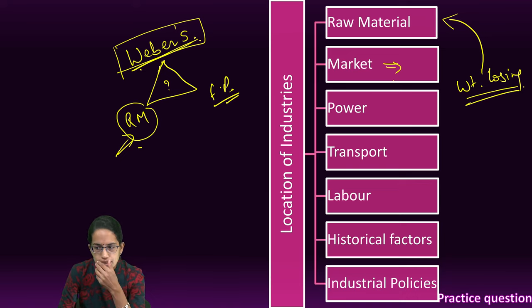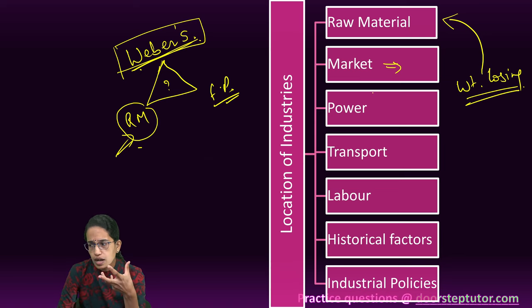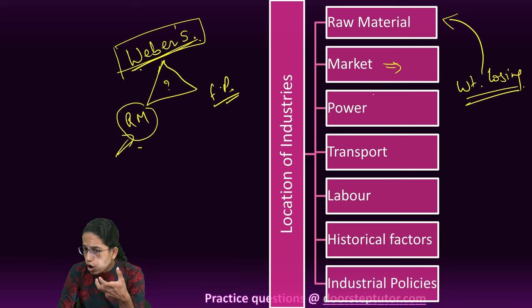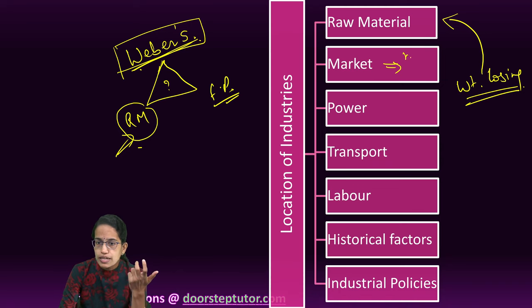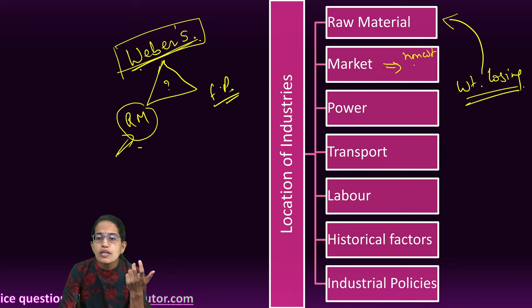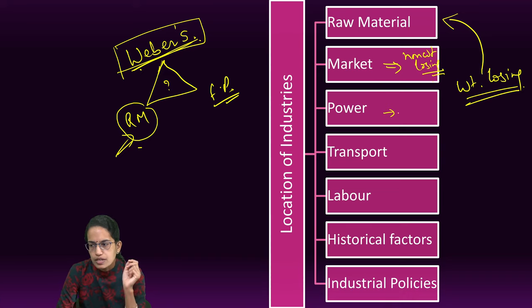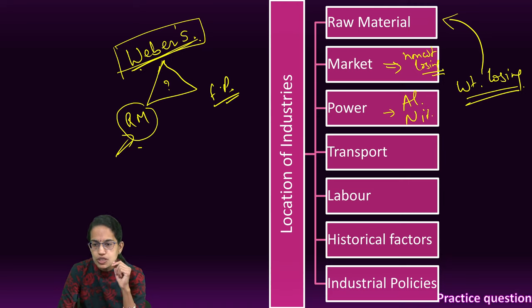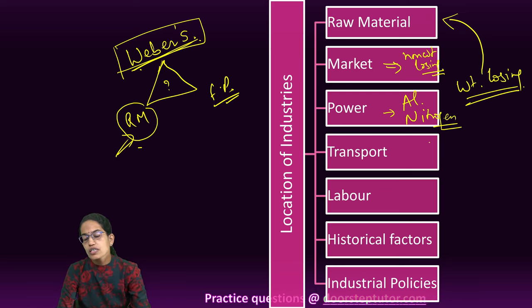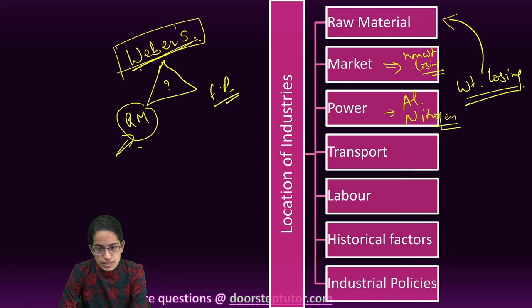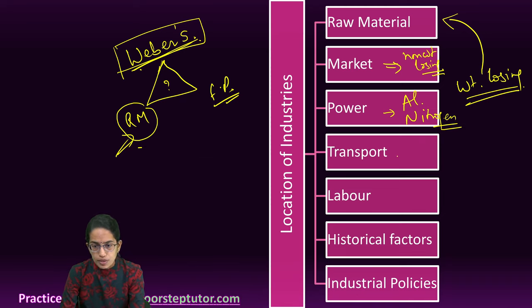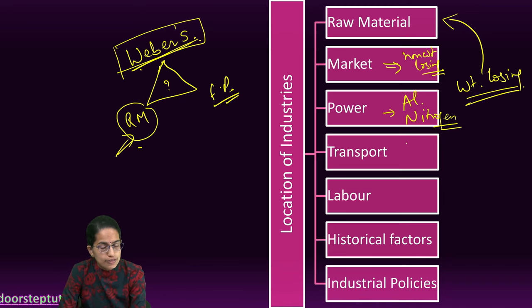Non-weight-losing industries, such as heavy machine tools, would be located close to the market area. The next location factor is power — for example, the aluminum industry and the synthetic nitrogen industry are located closer to the source of power because they require huge amounts of energy in their processing. Therefore, aluminum and synthetic nitrogen are two typical industries located close to power sources.